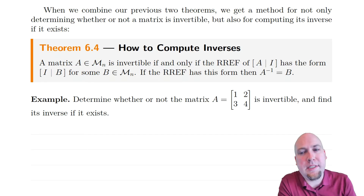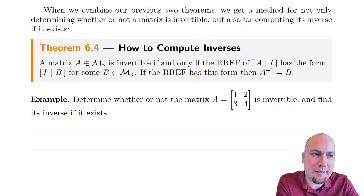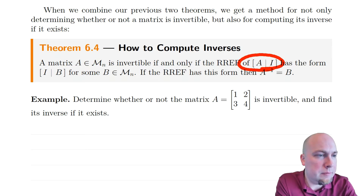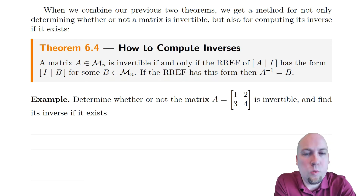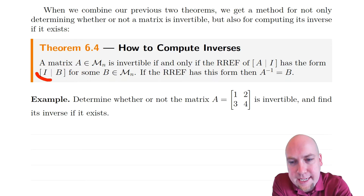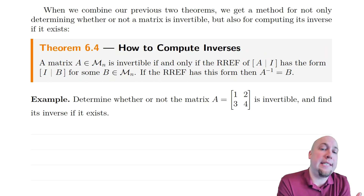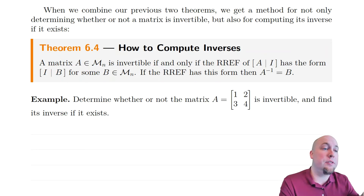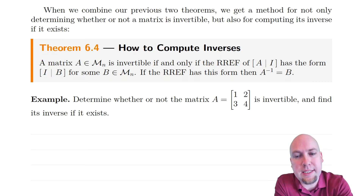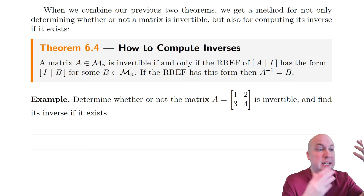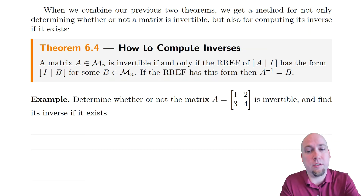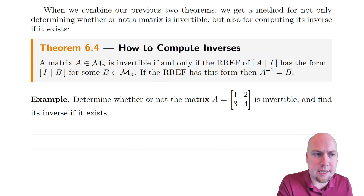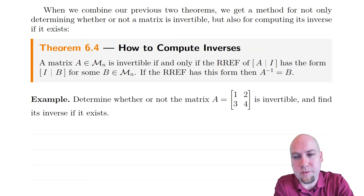Here's how it works: if you want to find the inverse of a matrix, augment that matrix with the identity matrix and row reduce as much as possible, trying to get an identity matrix on the left-hand side. If you're able to get identity on the left, then whatever's on the right is your inverse. If you're not able to row reduce down to identity on the left, that means there is no inverse — the matrix is not invertible, so just ignore the junk on the right-hand side; it's not useful.